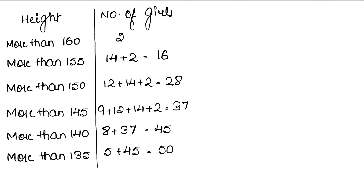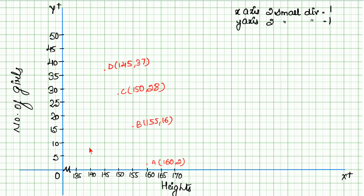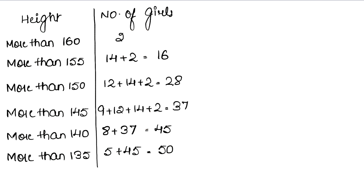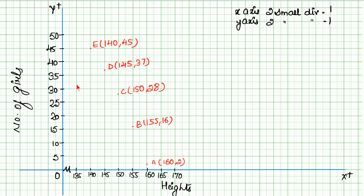Next, more than 140 corresponds to 45, giving us point E at (140, 45). Finally, more than 135 corresponds to 50, giving us point F at (135, 50). All six points are now plotted on the graph.